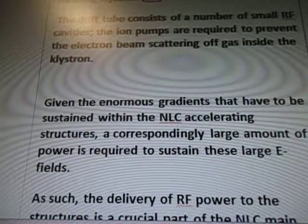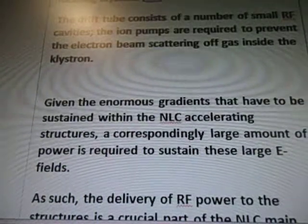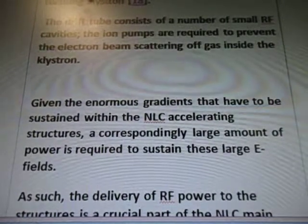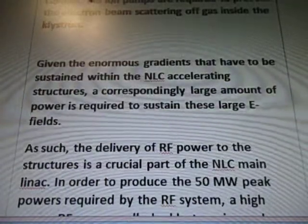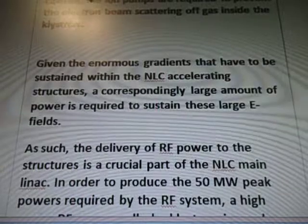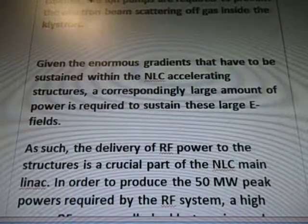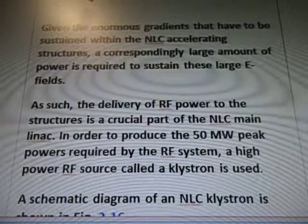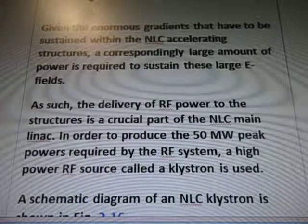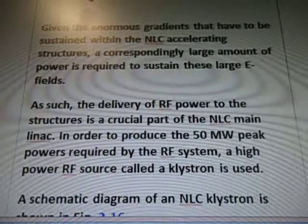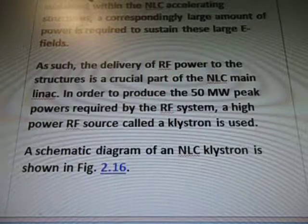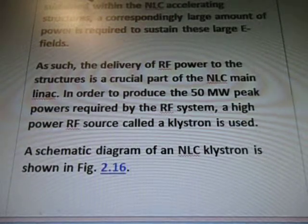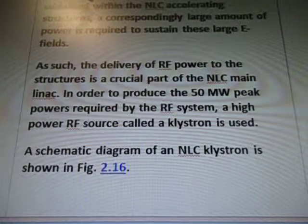Given the enormous gradients that have to be sustained within the NLC accelerating structures, a correspondingly large amount of power is required to sustain these large E-fields. As such, the delivery of RF power to the structure is a crucial part of the NLC main linac. In order to produce the 50 MW peak powers required by the RF system, a high-power RF source called a klystron is used.